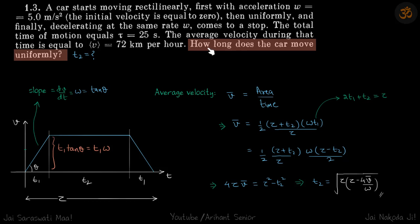We need to find how long does the car move uniformly. So we need to find this time t2. They have given the total travel time is tau, and also they are given the acceleration is w.